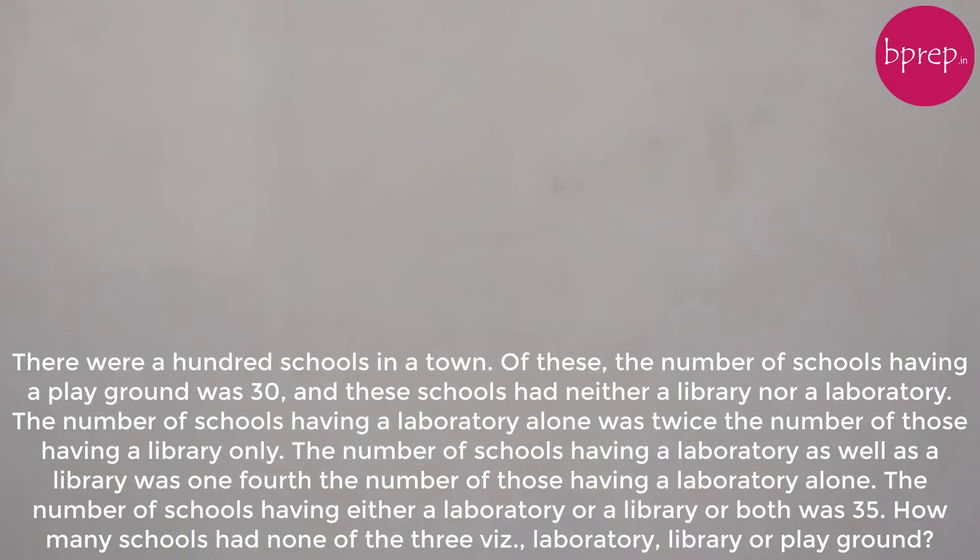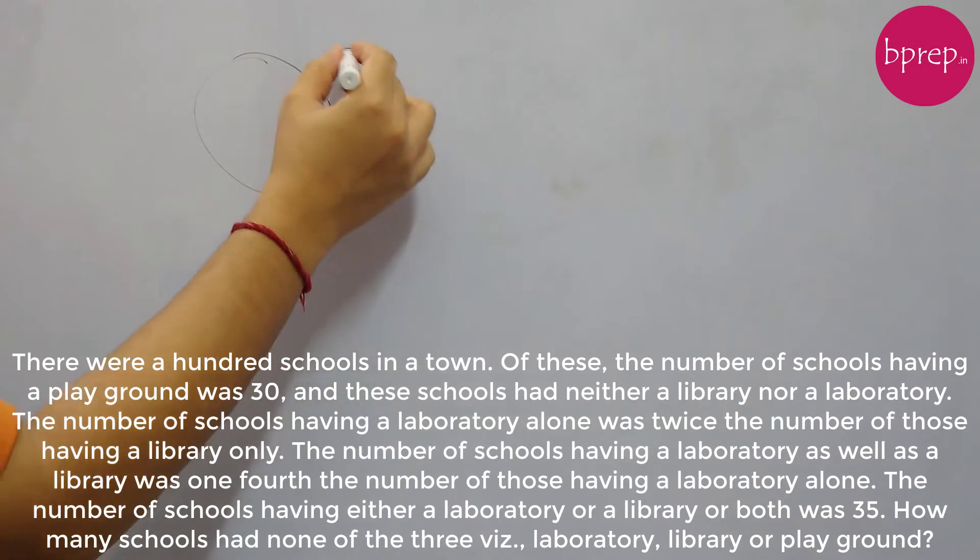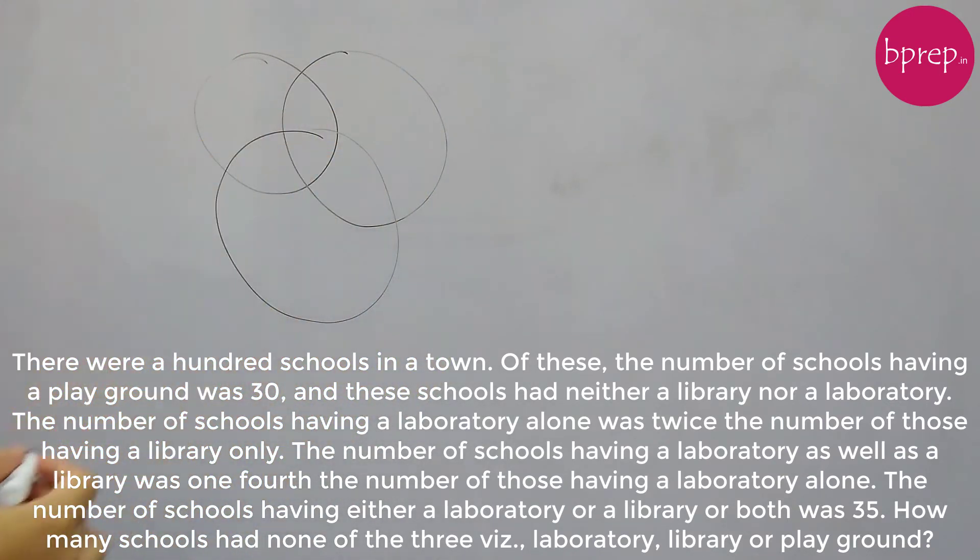Let's start. There were a hundred schools in a town. Of this, the number of schools having a playground was 30. And these schools had neither a library nor a laboratory. So seems like there are three facilities available in any school. So let's denote them by circles.